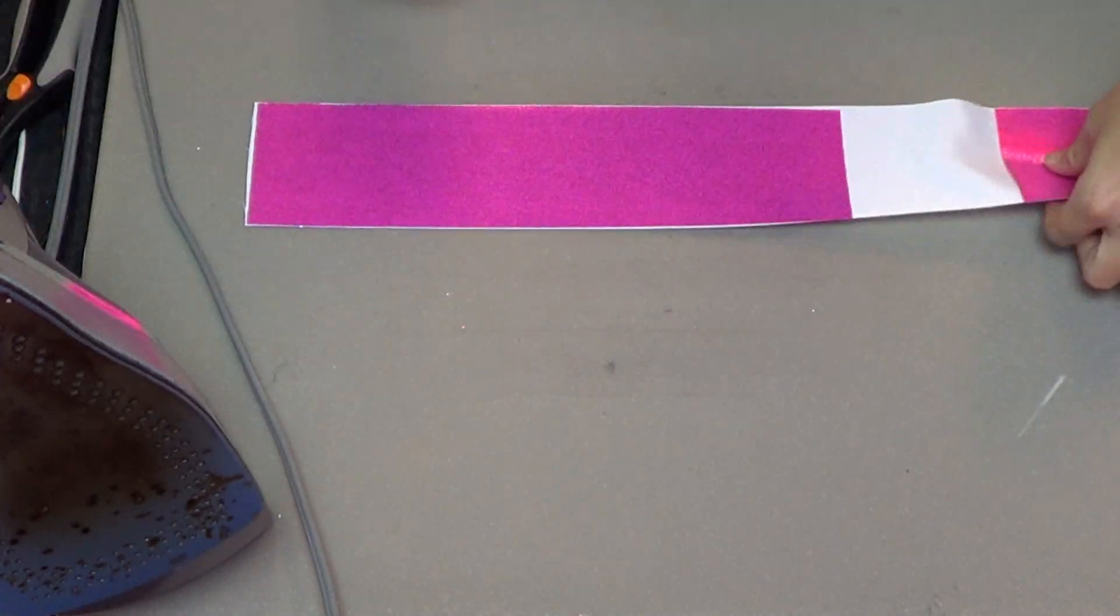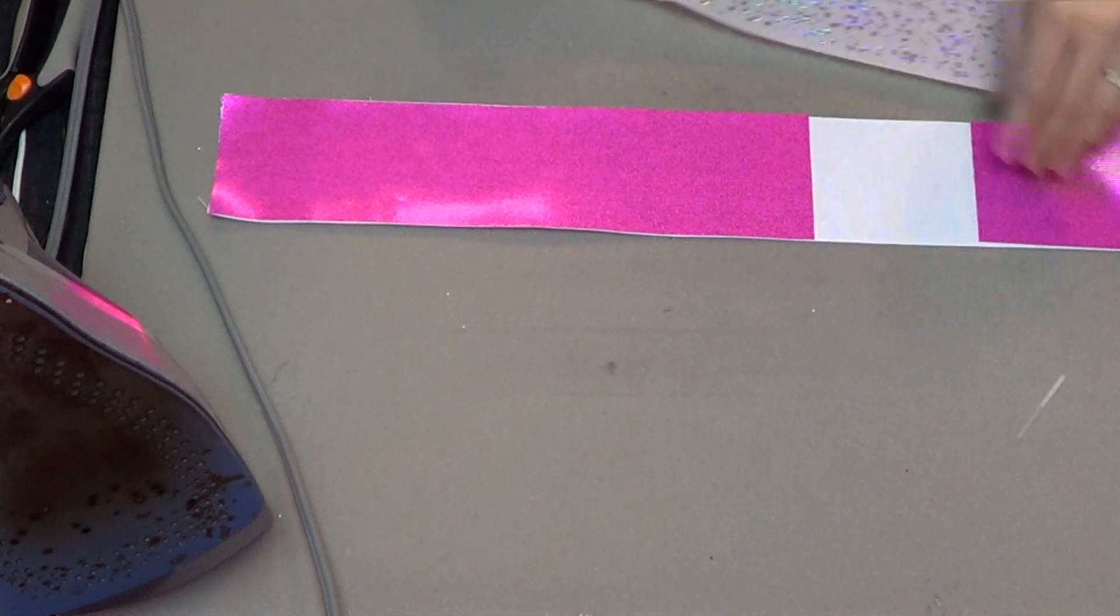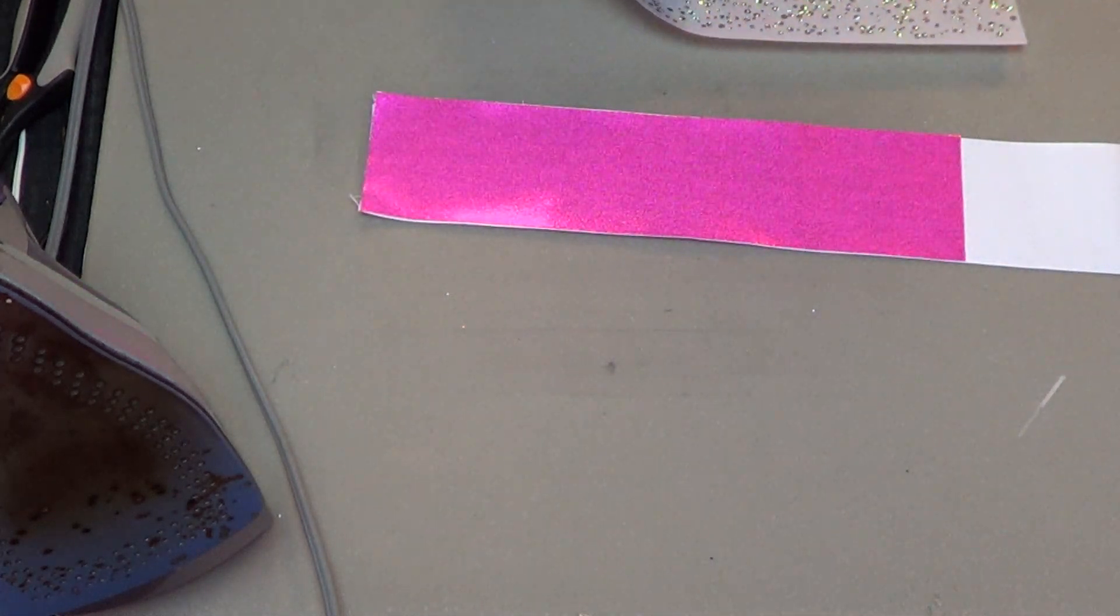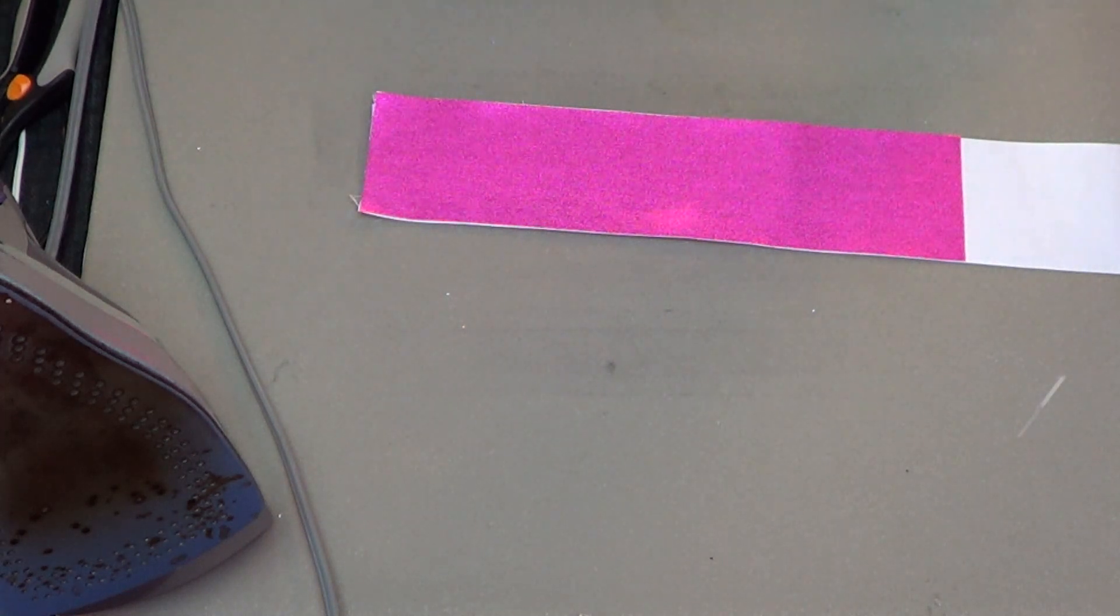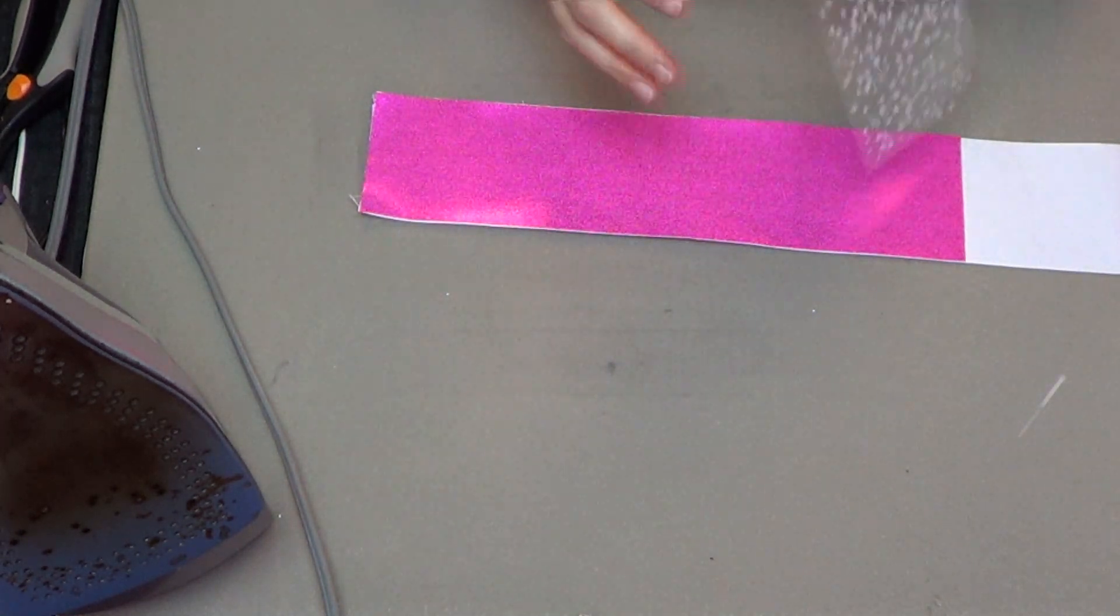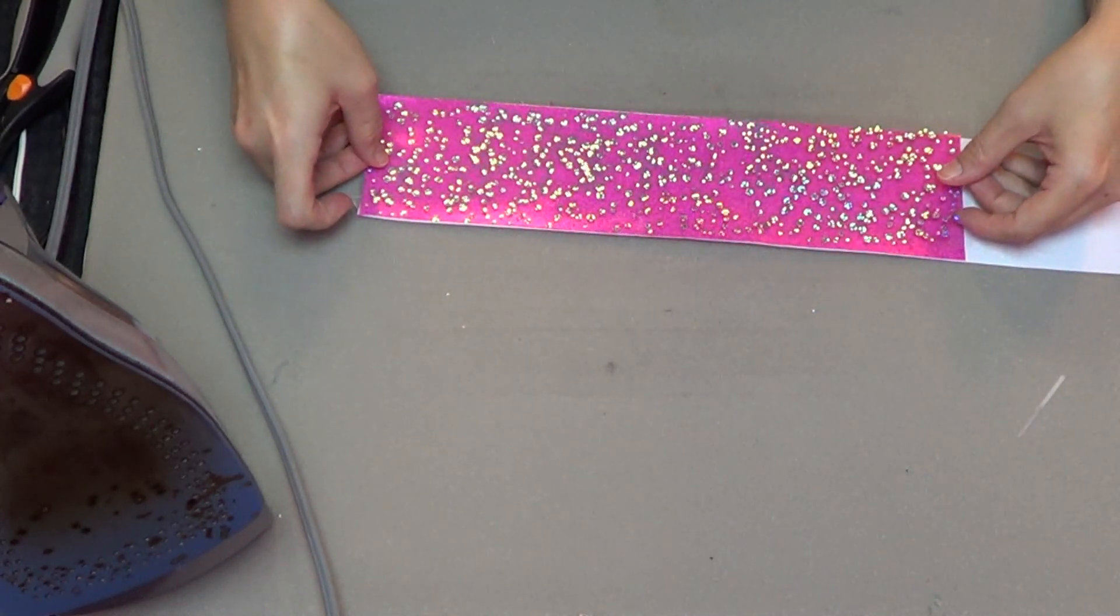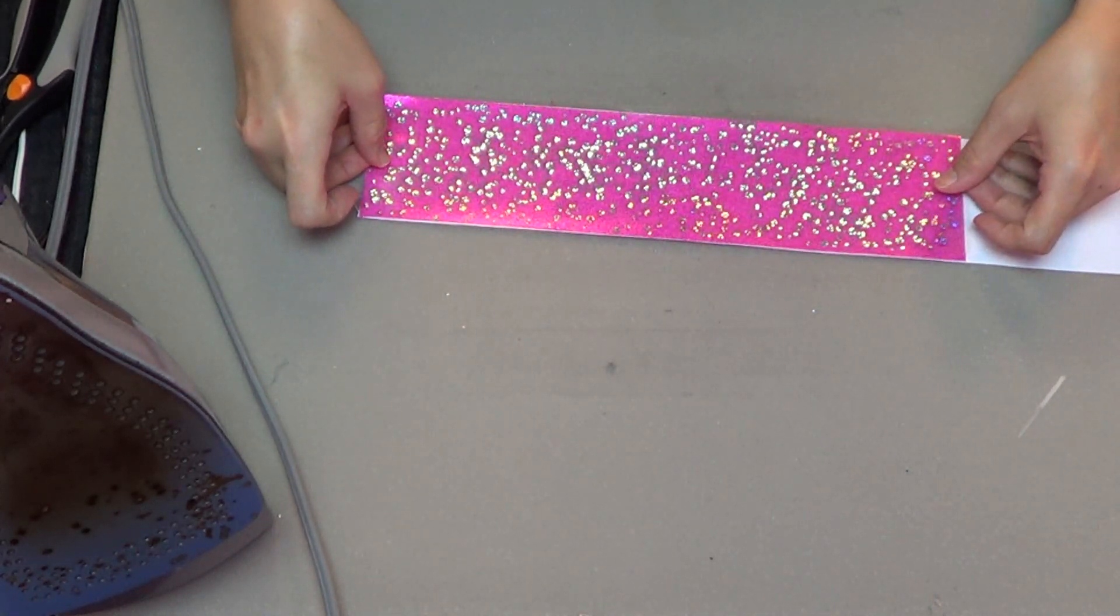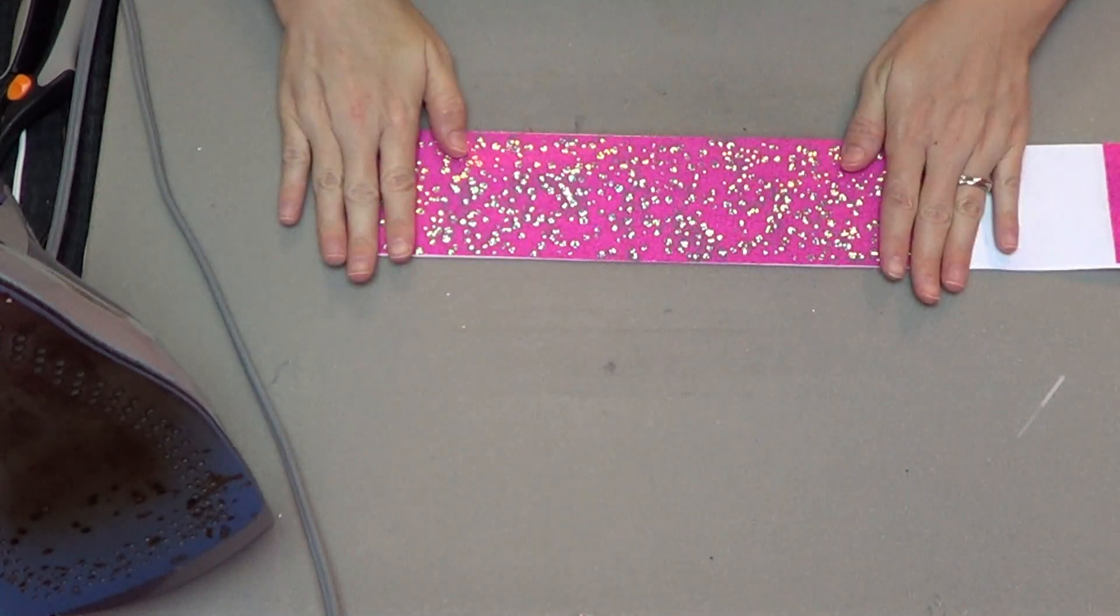Now that this fabric is in place, I'm going to use one of our new patterns of spangles. These come on a plastic carrier sheet, and all you have to do is peel away the back.